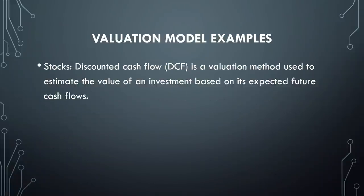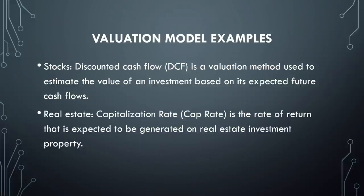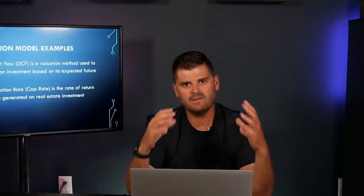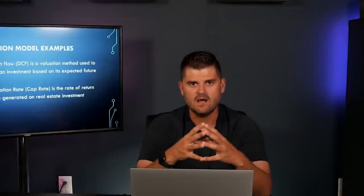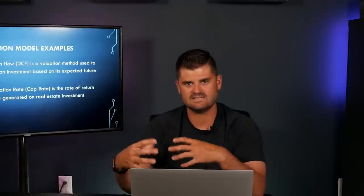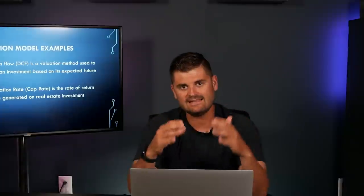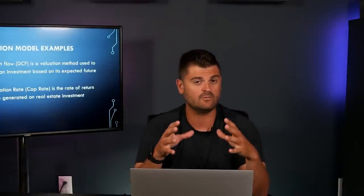When we're looking at different types of assets, there are valuation models that work best for specific types of assets. In the stock market, when you're looking at a single stock trying to find its future value, one of the most popular valuation models is discounted cash flow — basically looking at expected future cash flows to come up with what it could be worth in the future. For real estate, the capitalization rate or cap rate is basically the rate of return you expect to generate over time. But as we talked about in past videos, Bitcoin doesn't create cashflow. It's a hard asset, but it's not a for-profit company and it's not a piece of real estate that's going to kick off cashflow. So we need to use completely different types of valuation models.